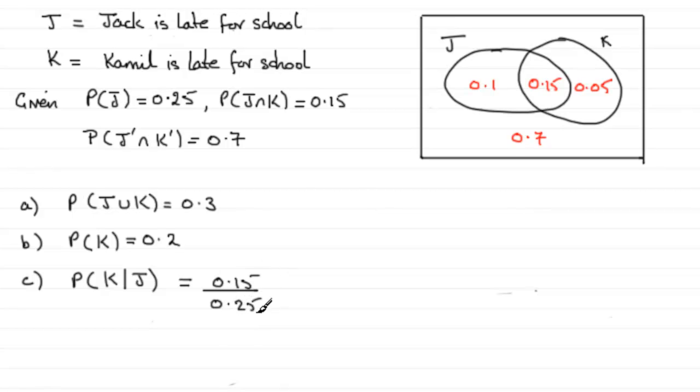If you work this out, you get 0.6. Now, if you're unsure of what I just did here, you can also just stick to the formula for conditional probability.